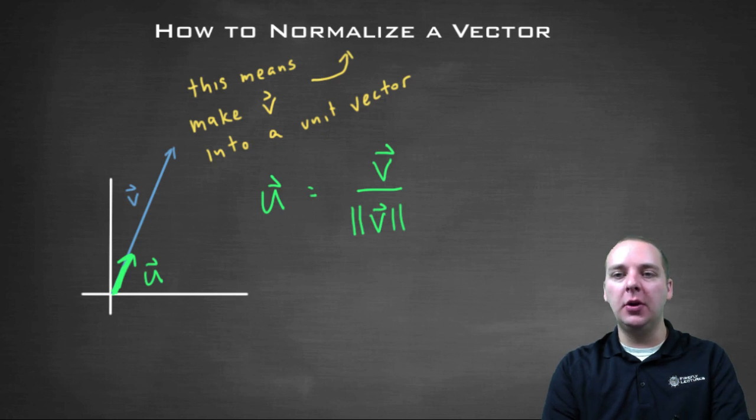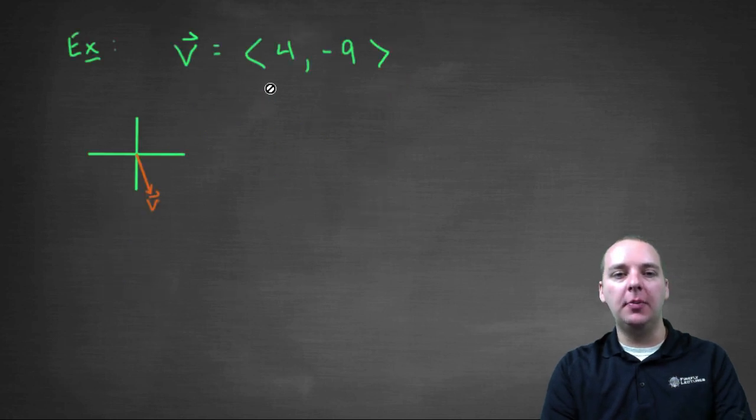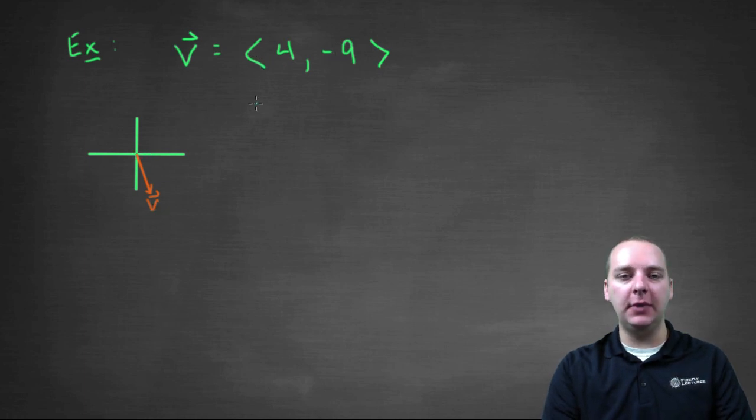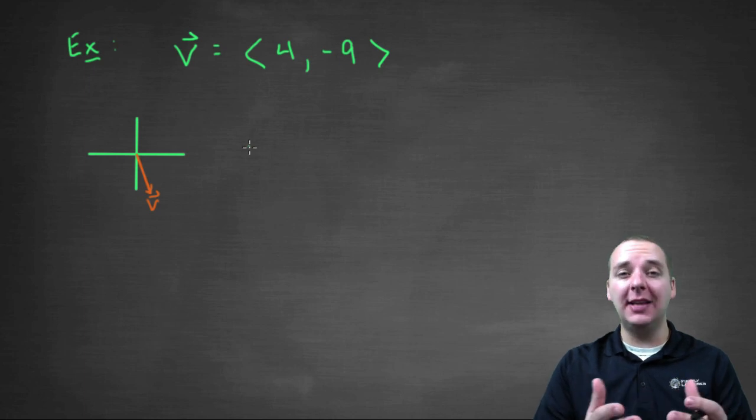So let's wrap up this video with a quick example. Here we've got a vector, we'll call it four comma negative nine. So it goes right four and down nine in component form. And obviously that guy's much longer than a unit vector.